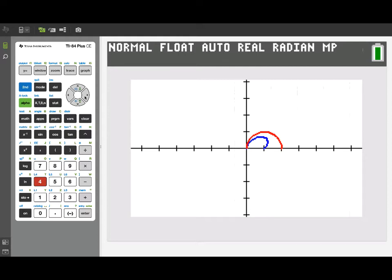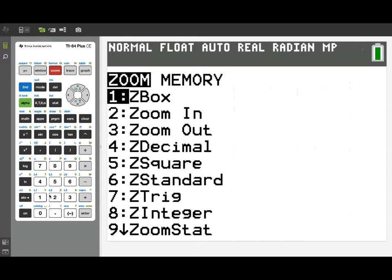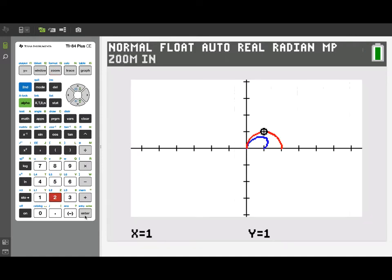I'm going to cursor over, and let's kind of recenter the screen. Let's say how about at the top of that red semi-circle. So it looks like that's approximately at 1,1. So we're going to arrow over our cursor to 1,1, and then we'll go back to the zoom menu and use zoom in to zoom in with that as the new center point for our screen.